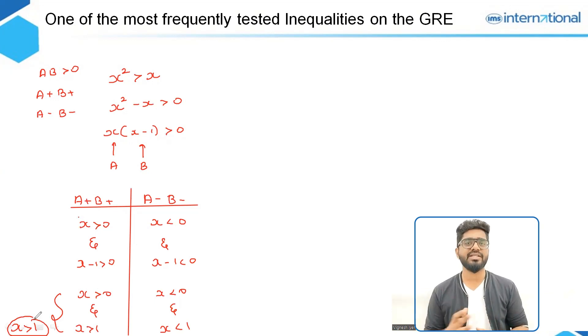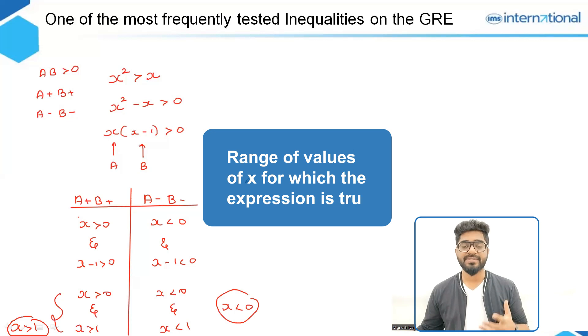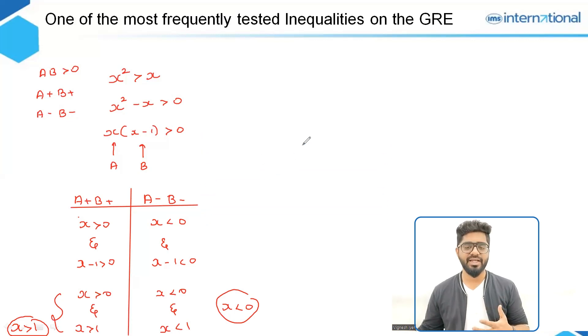Similarly, when we say X is less than 0 and X is less than 1, this can be written as a single expression as X is less than 0 because that becomes the common shaded part. So yes, these are the range of values of X when we say X squared is greater than X. That is, either X is greater than 1 or X is less than 0.